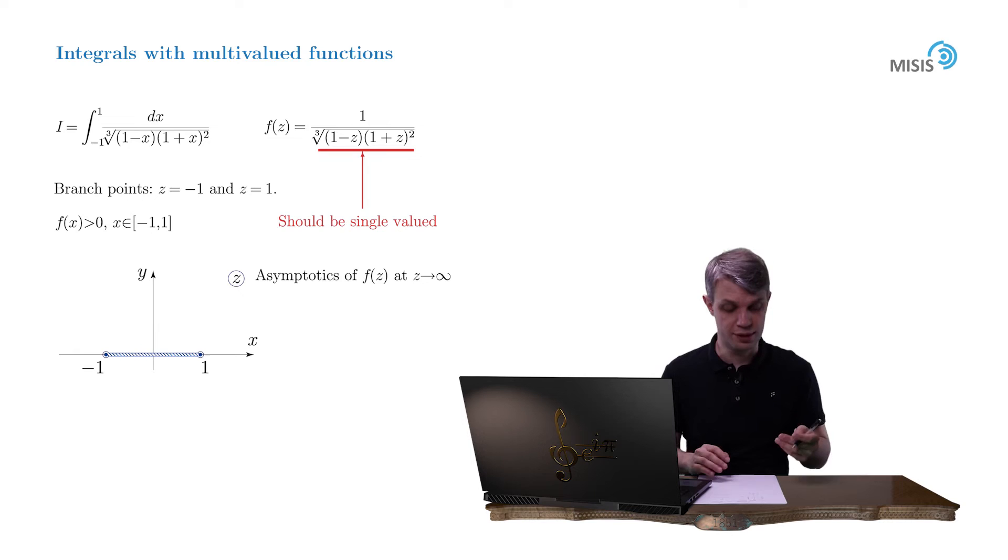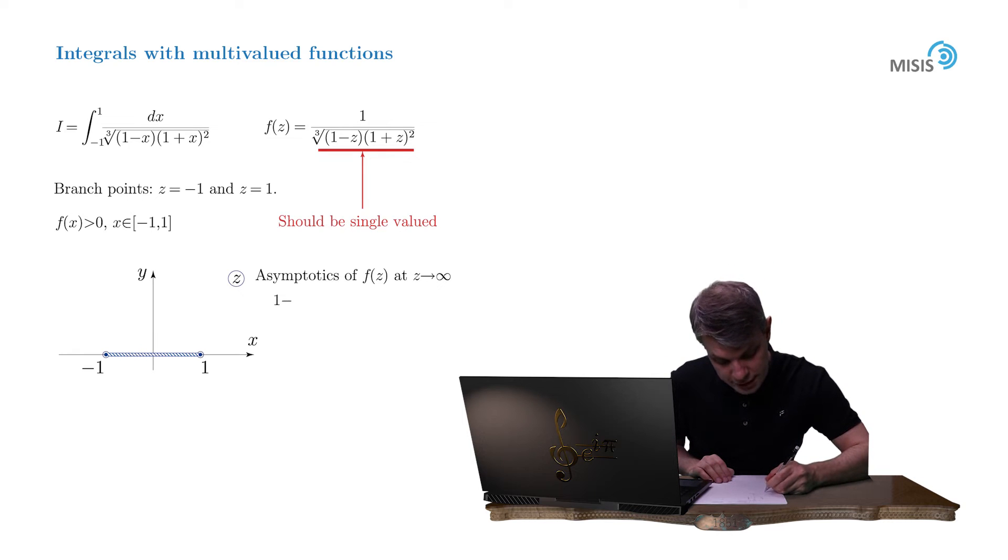So let's check the asymptotics. 1 minus z becomes negative z. 1 plus z turns into z. Therefore, we have f(z) tending to 1 divided by the cubic root of minus z cubed, which is simply the cubic root of negative 1 times z.